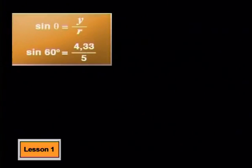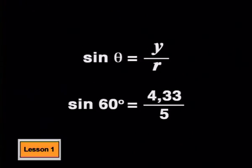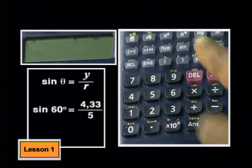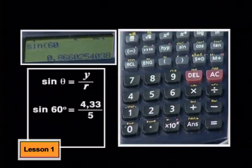So now, sin 60 degrees is 4.33 divided by 5. Working that out on a calculator, you get sin 60 degrees is 0.866.